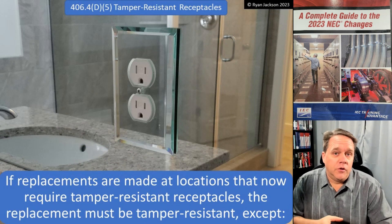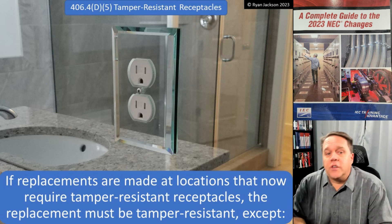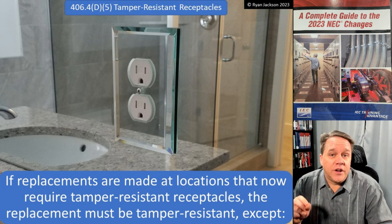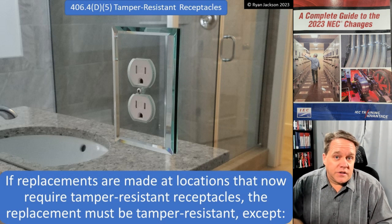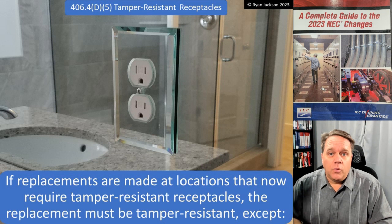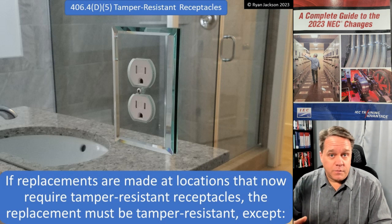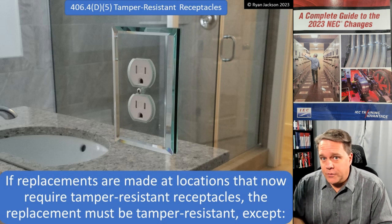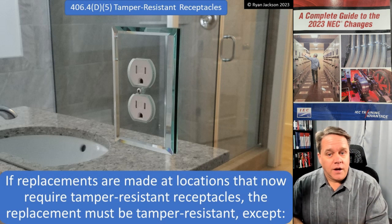I'm not going to read all of the replacement receptacle requirements, just the ones that changed. 406.4D4 talks about GFCI replacements. 406.4D5 talks about tamper-resistant receptacles — it says if replacements are made at locations that now require tamper-resistant receptacles, the replacement must be tamper resistant, with an exception. Where do you need tamper-resistant receptacles? You go to 406.12. Item one, which has been in the code since 2008, is dwelling units. If you're putting a receptacle in a house, it's got to be tamper resistant. So if you replace a receptacle in a house, it has to be tamper resistant — assuming 125 or 250 volt, 15 or 20 amp receptacles.